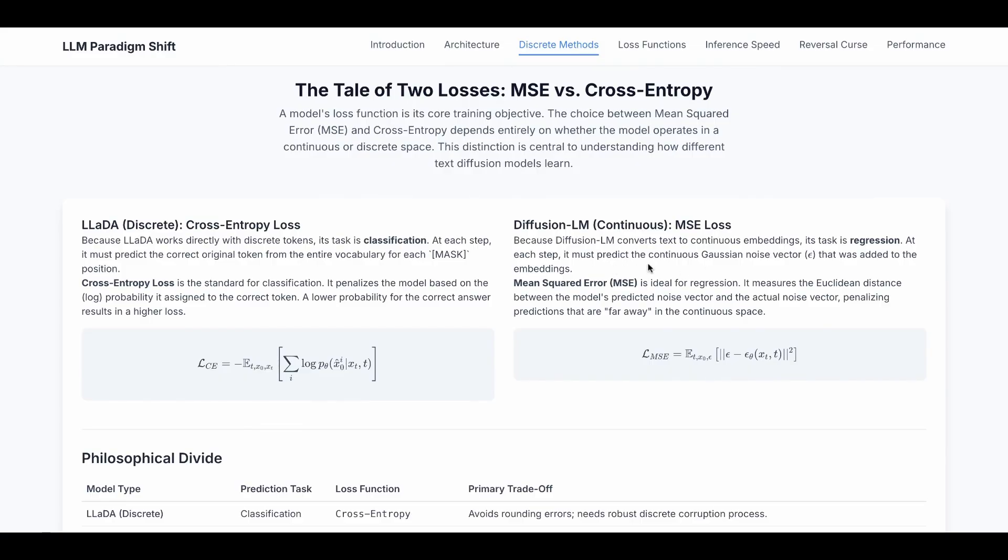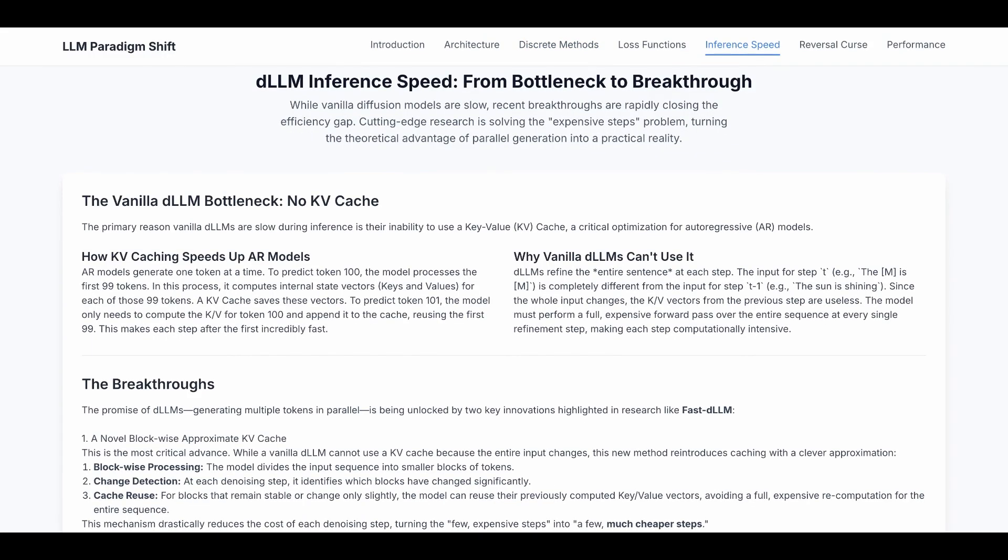Since it converts tags to a continuous embedding, the task is regression. At each step it must predict the continuous Gaussian noise that was added to the embedding. And MSE is ideal for regression. It measures the distance between the model's predicted noise vector and the actual noise vector, penalizing predictions that are far away in the continuous space. Now let's take a look at recent breakthroughs for diffusion LM.